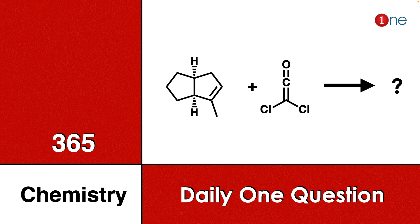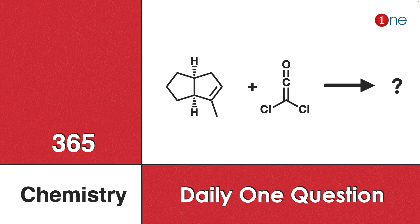Welcome to One Chemistry. This is the 365 Chemistry series — one question daily for you. Here you have a diene and an alkene, where hydrogen and a cumulative diene are reacting with each other. You have to guess what will be the final product.